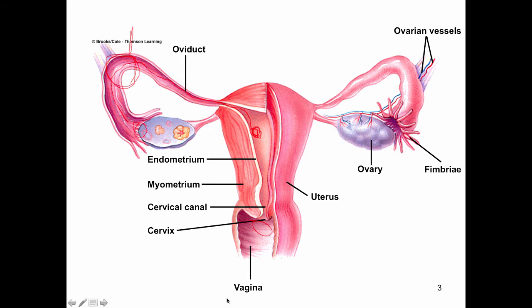The sperm deposited in the upper vagina contains fluid from the prostate gland and fluid from the seminal vesicles, which have different pH ranges. Prostatic fluid tends to be alkaline, while seminal vesicle fluid tends to be acidic. The overall pH of semen is about 7.2 to 7.8, which is designed to protect sperm from the acidic vaginal environment, since the vaginal pH is approximately 4.3.